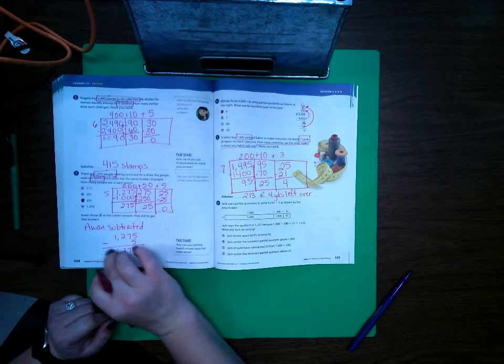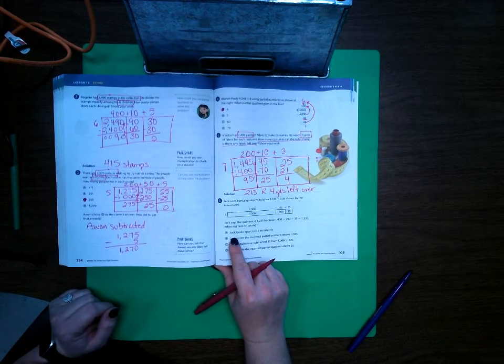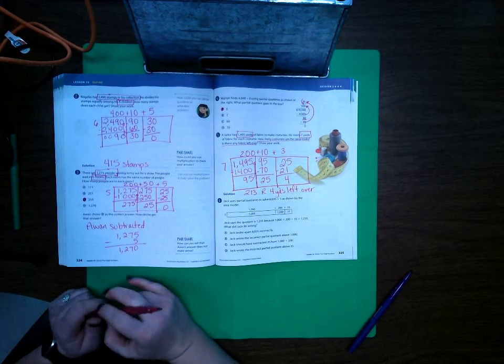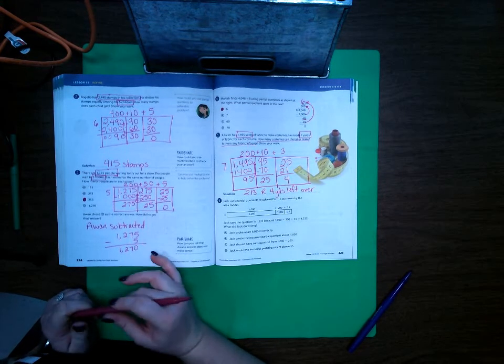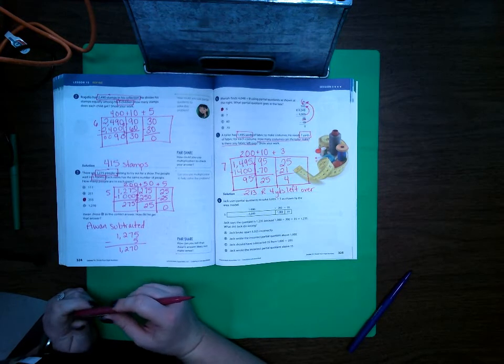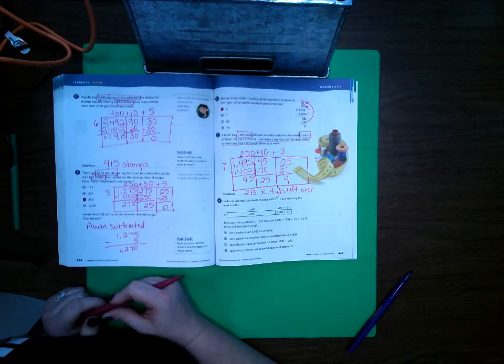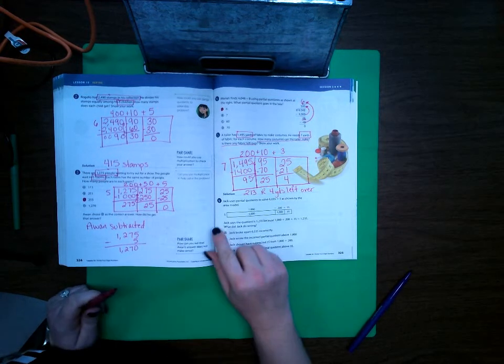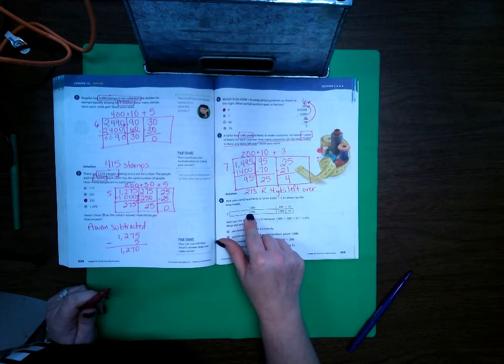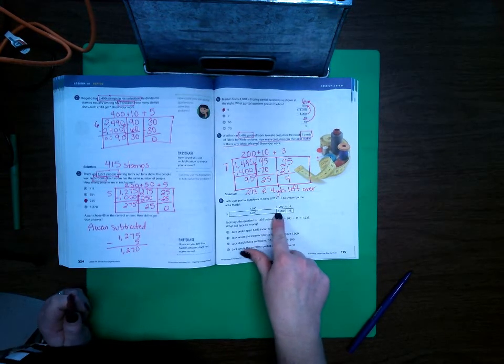Number 6: Jack uses partial quotients to solve 6,035 divided by 5, shown by the area model. Jack says the quotient is 1,235 because 1,000 plus 200 plus 35 equals 1,235. What did Jack do wrong? Let's look here. Oh, Jack got 5,000 here, but he should have had 6,035.